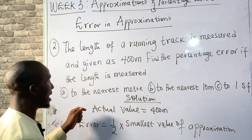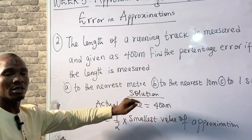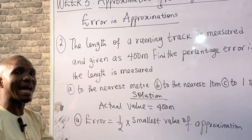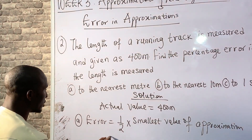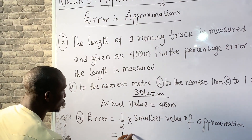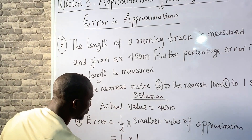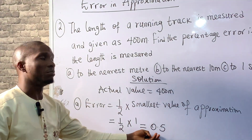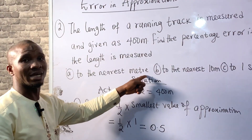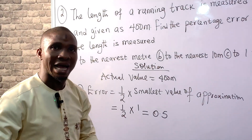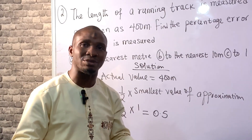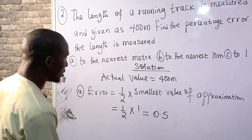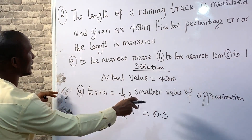In question (a) we are to approximate to the nearest meter. The smallest value when approximated to the nearest meter is 1, so the error is going to be 1 over 2 times 1, which is 0.5. So 0.5 is the error because we are approximating to the nearest meter — nearest whole number gives a smallest value of 1.